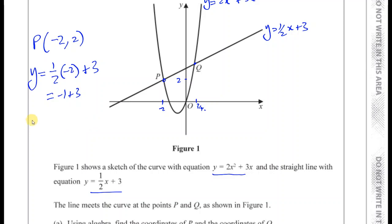And for Q, you've got the x-coordinate is 3 quarters. So you have y equals a half times 3 quarters and then plus 3. That gives you 3 over 8 plus 3. You can write that as 3 and 3 eighths if you want.